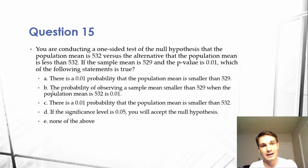So in this, we are saying that the probability of observing a sample mean smaller than 529 when the population mean is 532 is 1%. So practice this, study this, get that this is what we're saying by putting a p-value and having a sample mean.